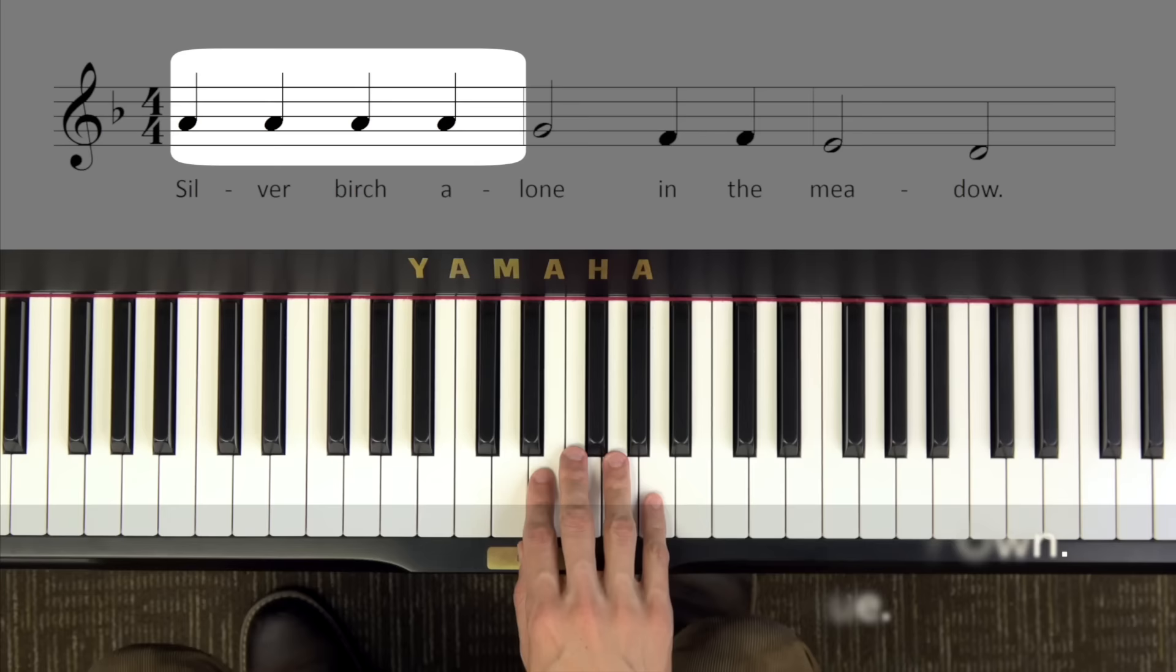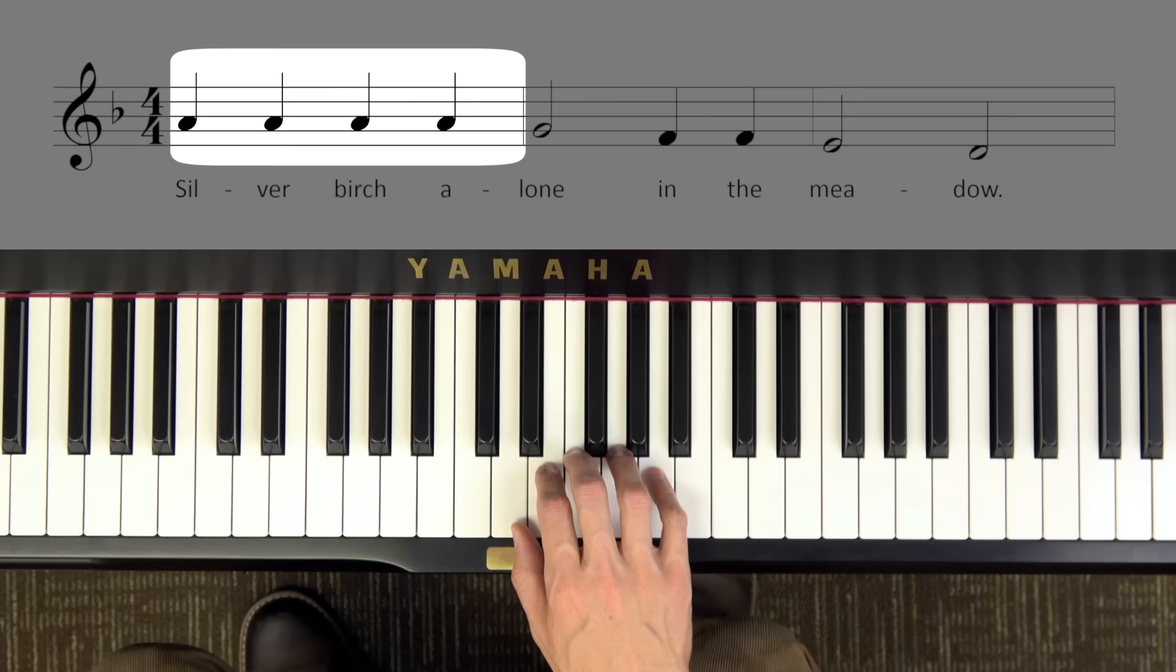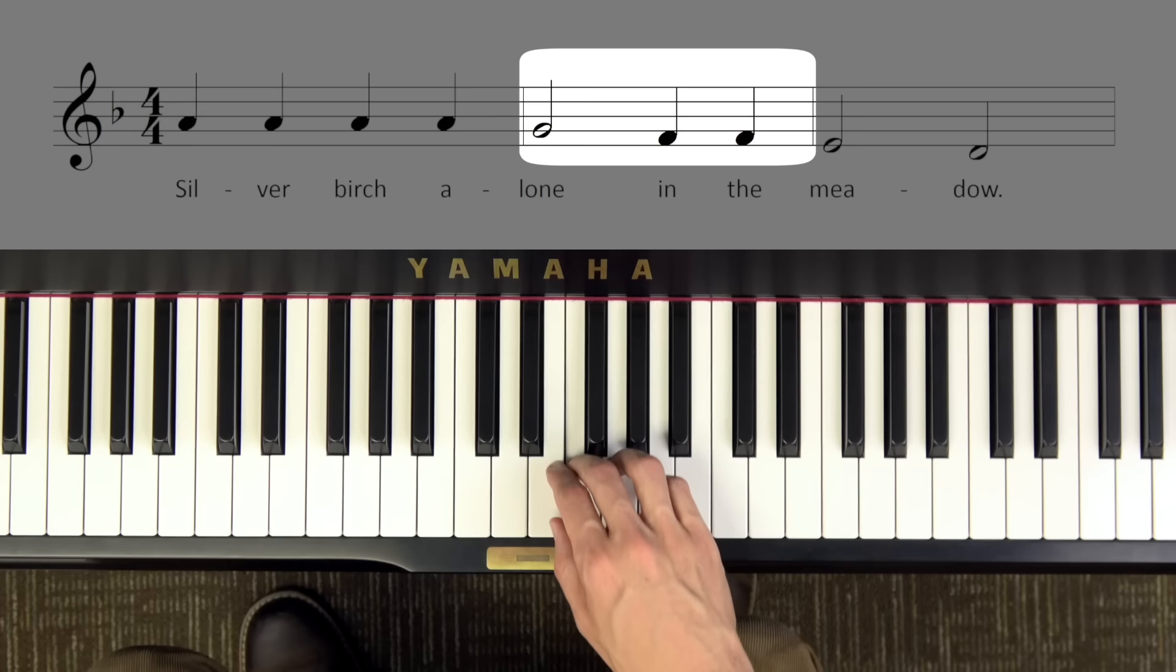Okay, let's try it together and sing the solfège starting with finger 5 on A, which is SO in the D minor pentascale. Ready, go. SO SO SO SO FA ME ME RE DO.